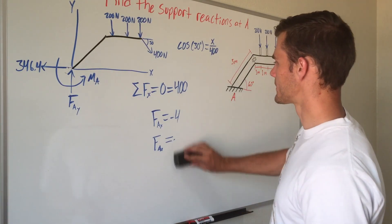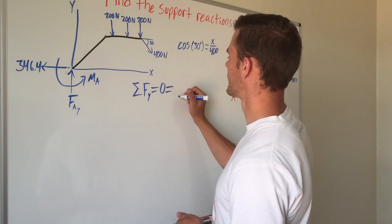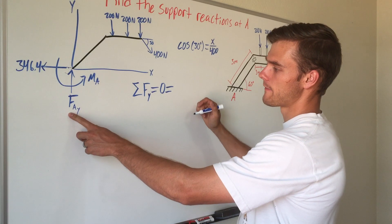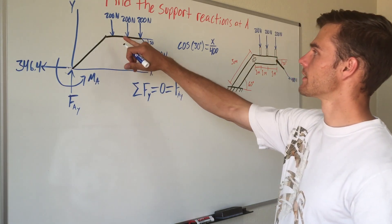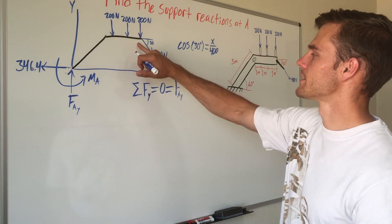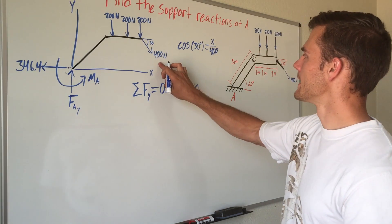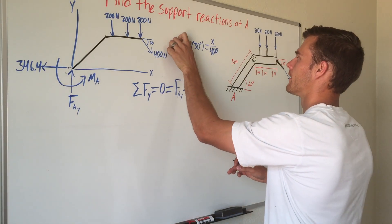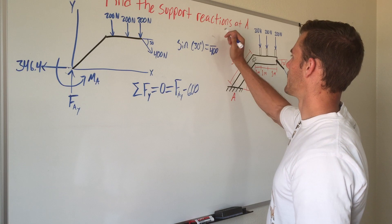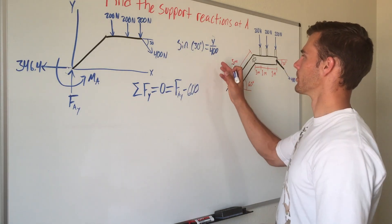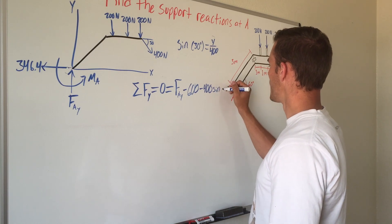Now we solve for forces in the Y direction, setting the sum equal to zero. F_AY is going in the positive Y direction, so it's positive. We have three 200-newton forces going in the negative Y direction, which add up to minus 600. Then for the 400-newton rope, instead of cosine we use sine of 30 degrees for the Y component - the side opposite - so multiplying 400 over gives 400 sine of 30 degrees.